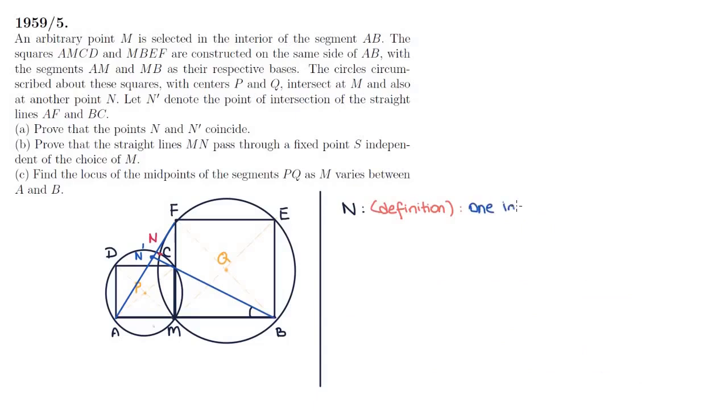Recall that N is defined as one of the intersections of the two circles, and we have proven so far that N' lies on both circles, so it's one of the intersections. To be thorough, let's note that M lies on AB, and N' doesn't, so N' can only be the other point of intersection. N' must be N. And we're done for part A.